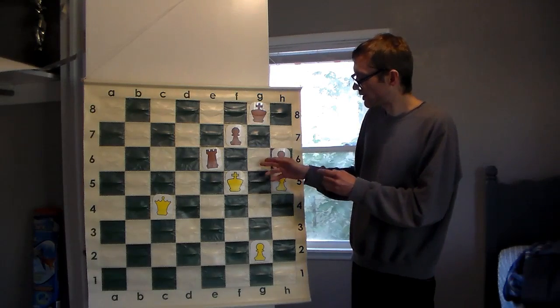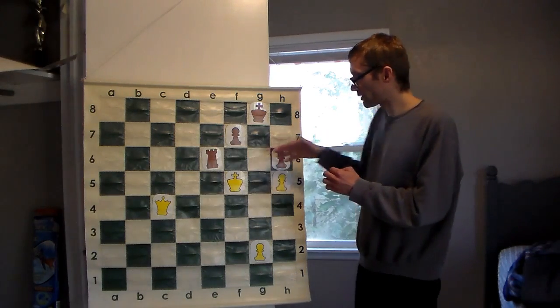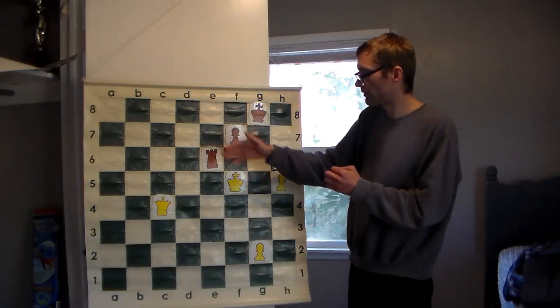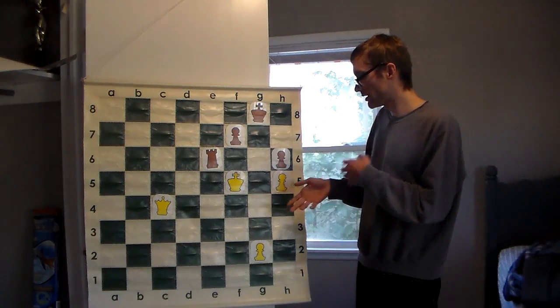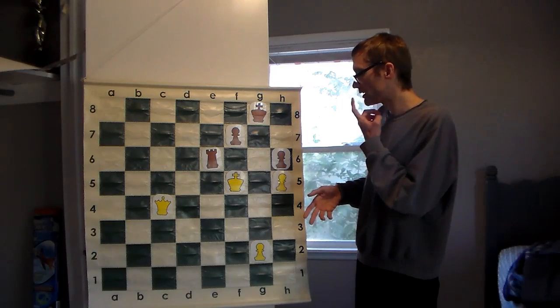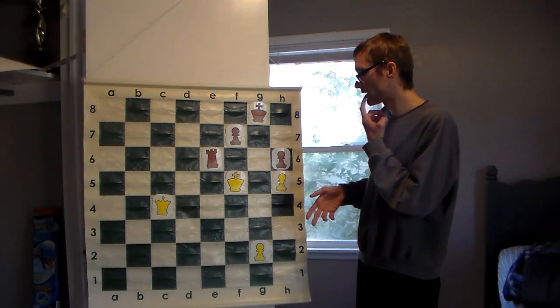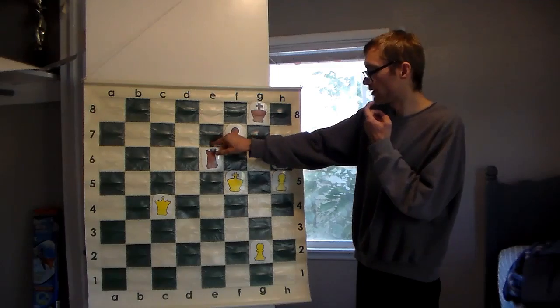Here the rook either has to stay on the sixth rank and try to prevent the White King from moving up, or the rook has to give up the sixth rank. And they really cannot give up the sixth rank and expect to hold the draw.